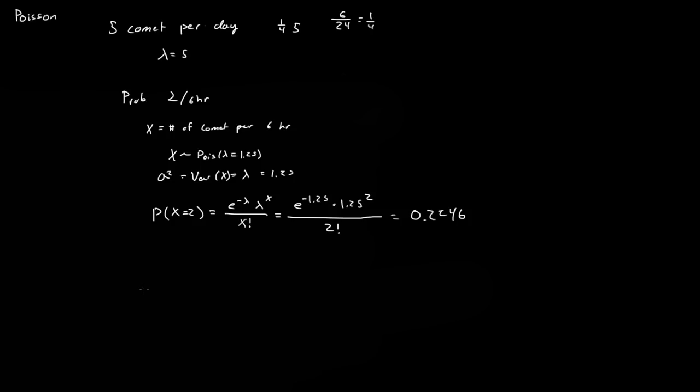So we found the probability of 2 comets passing by in a period of 6 hours. Now if I asked you what's the variance of that? Well, I said that was 1.5. Well, let's say I asked you what's the variance if x equals the number of comets per week?